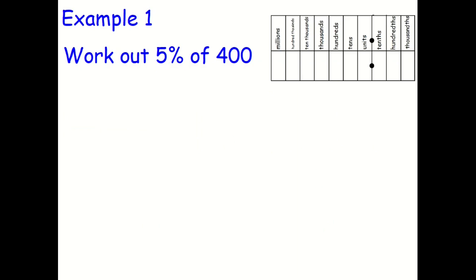Example number 1. It says work out 5% of 400. Now, if you've watched the previous video, you will know that you can use multipliers. And if you're really confident doing multiplication, you can do this calculation: 0.05, because that's what 5% is as a decimal, and you can multiply that by 400. So you can do that if you're confident doing a multiplication method and if you're confident putting that decimal point in the right place.